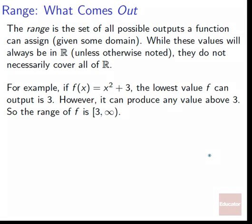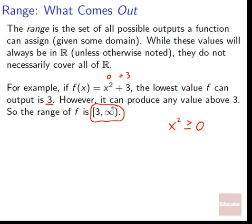Range is what comes out. Range is the set of all possible outputs a function can assign given some domain. These values will always be in the real numbers, but they don't necessarily cover all of the reals. For example, with f of x equals x squared plus 3, the lowest value f can output is 3, because x squared is always greater than or equal to 0. The lowest we can make x squared is 0, so the lowest possible output is 0 plus 3 = 3. We can produce any value above 3, so our range is everything from 3, including 3, up to infinity.